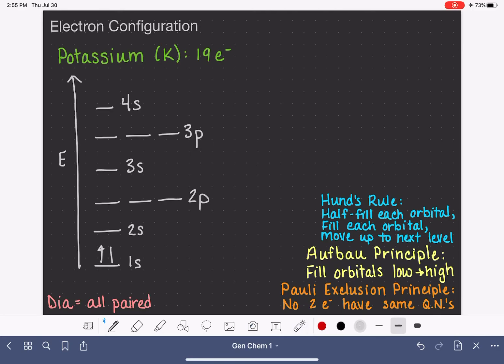1, 2, 3, 4, 5, 6, 7, 8, 9, 10, 11, 12, 13, 14, 15, 16, 17, 18, 19. And from this, we can read the electron configuration, which is 1s² 2s² 2p⁶ 3s² 3p⁶ 4s¹.